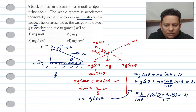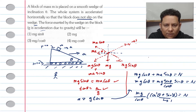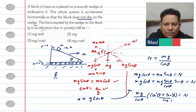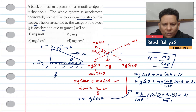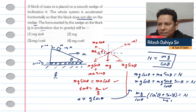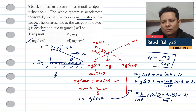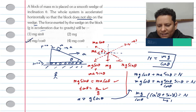Since sin squared theta plus cos squared theta equals 1, this simplifies to: normal force N equals Mg divided by cos theta. Hence, option number 3 is the correct answer.